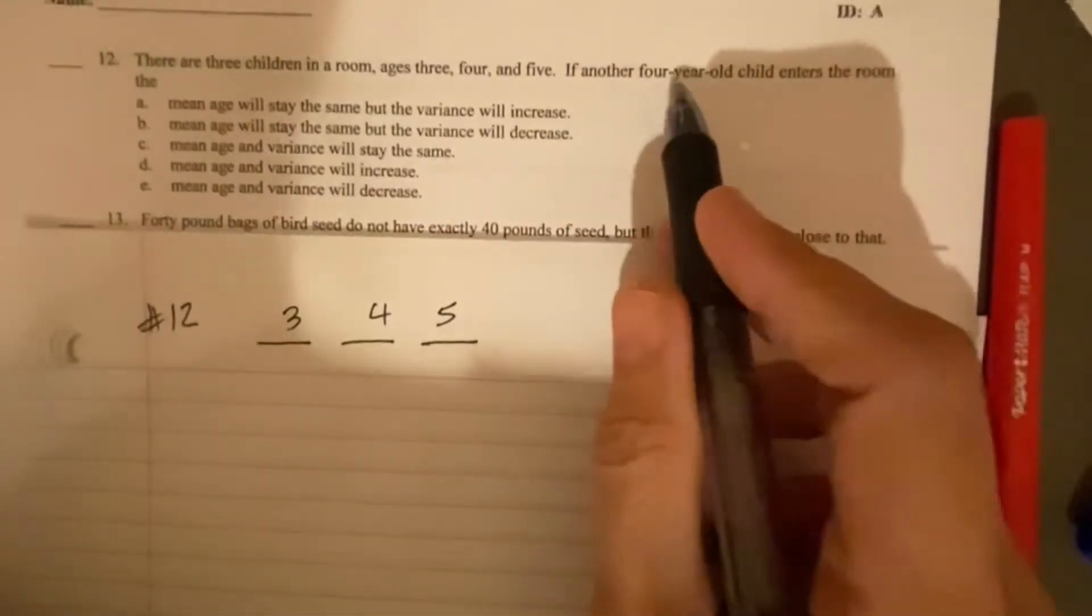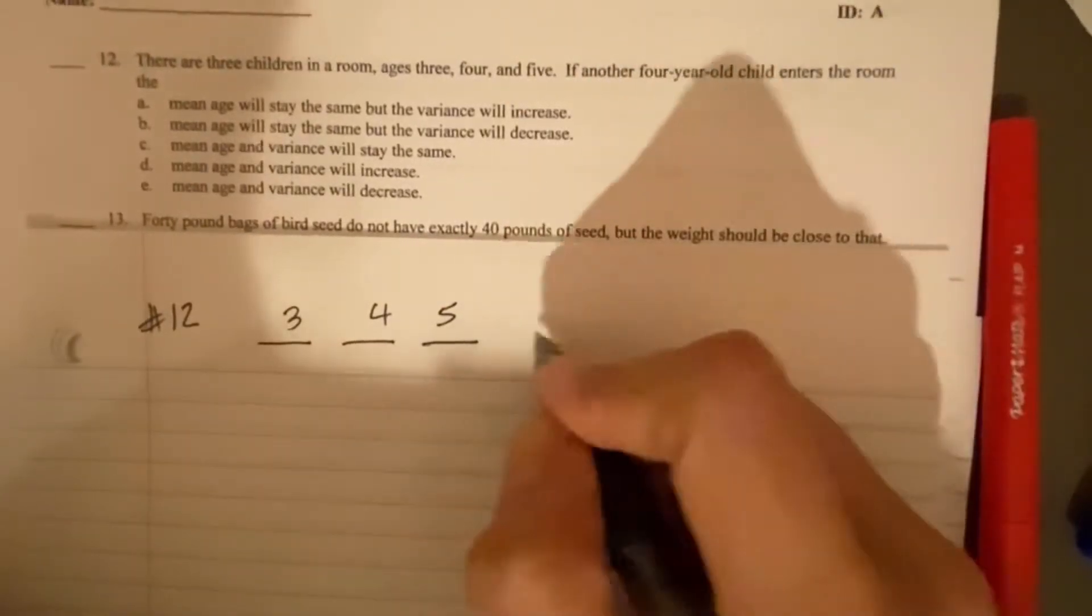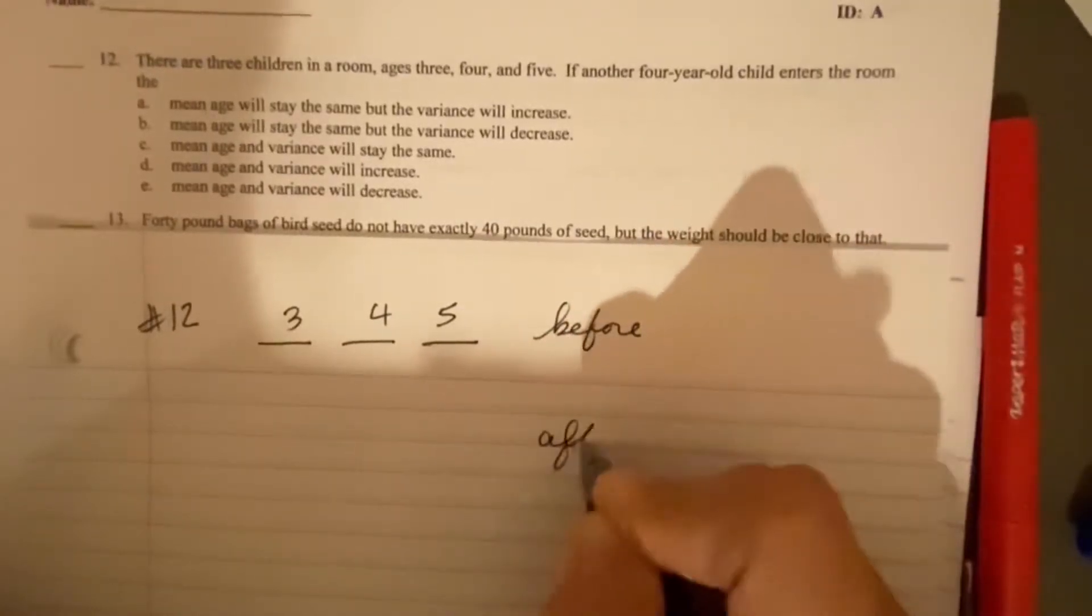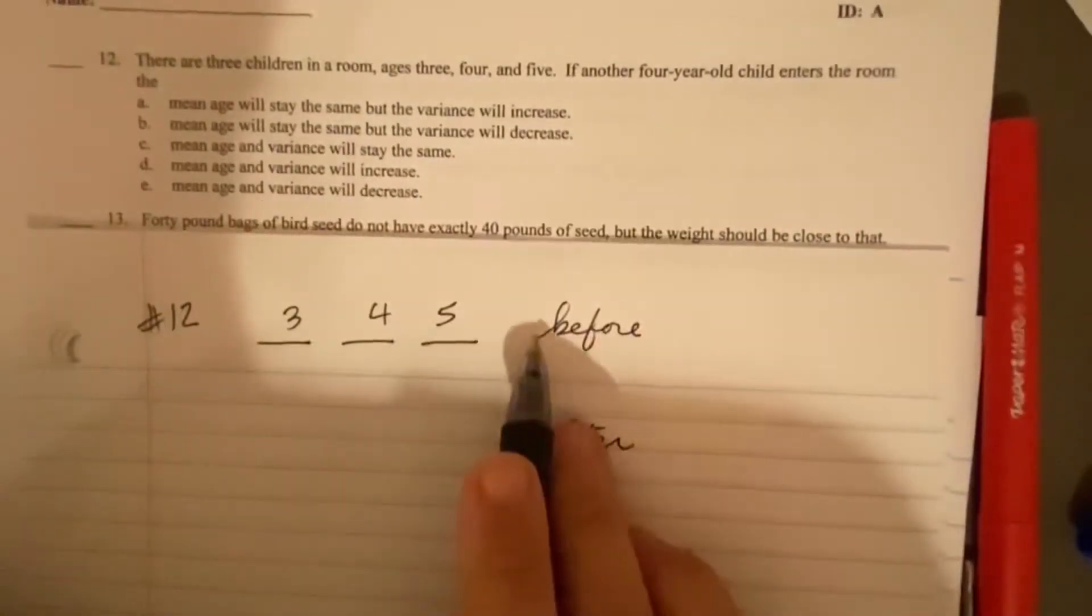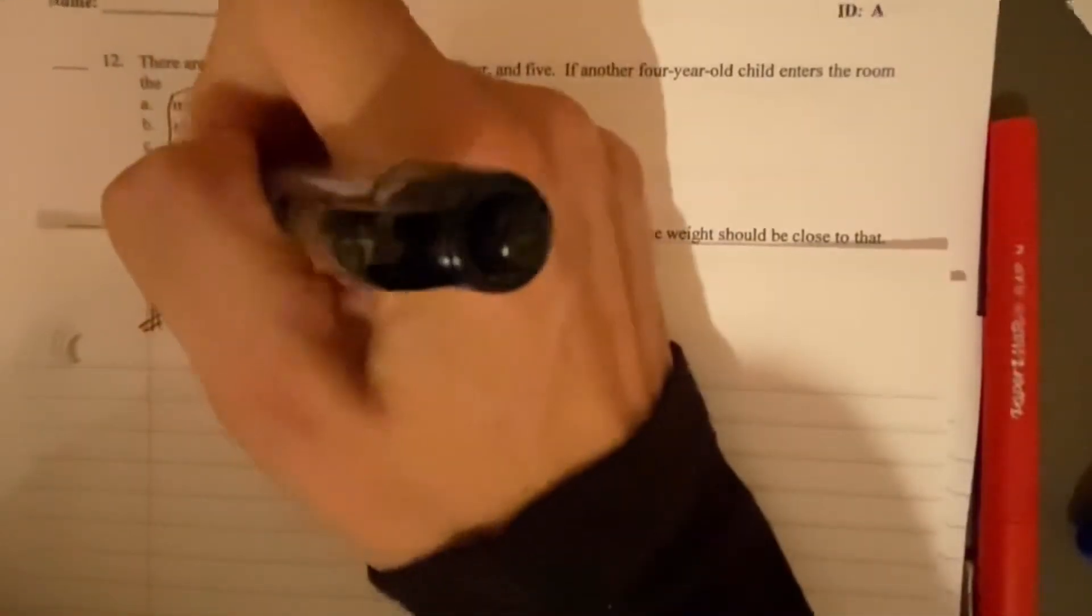If another four-year-old child enters the room. So this is before and this is after. Three children in the room, three, four, and five. What would happen to the mean? And then what would happen to the variance?